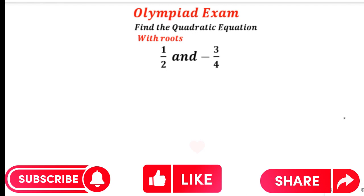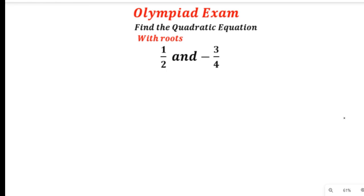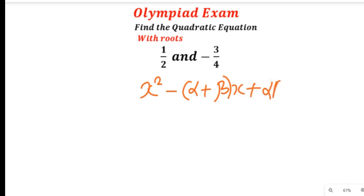Now let's consider this question. Whenever you are asked to find the quadratic equation or the polynomial equation for any roots that are given to you, the first thing that should come to your mind is to use a formula. We have a formula you can use to arrive at your results as fast as possible. The formula is: x squared minus (alpha plus beta) x plus alpha multiplied by beta equals zero.